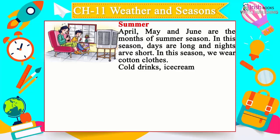The hot and dry winds that blow during summer are called loo. The rainy season comes after the summer season. During this season, there is greenery everywhere, which helps the farmers to grow crops.